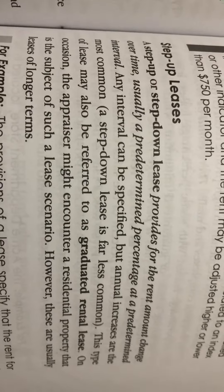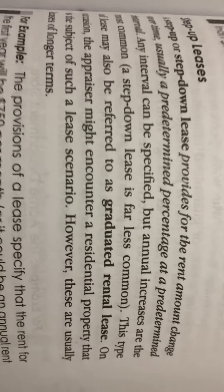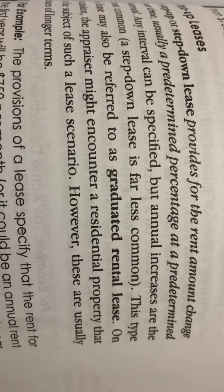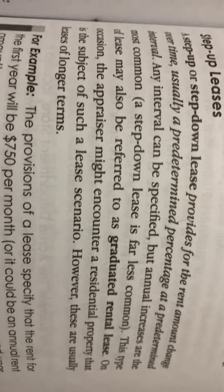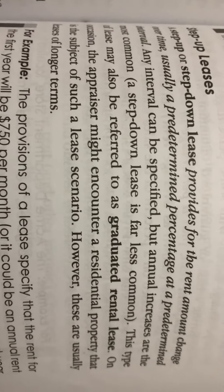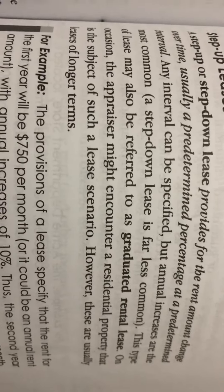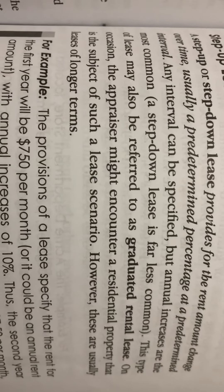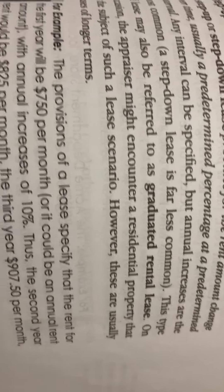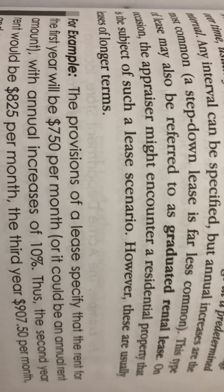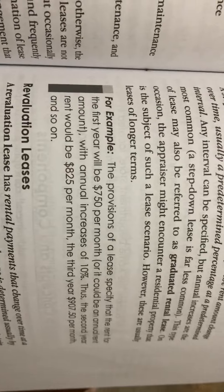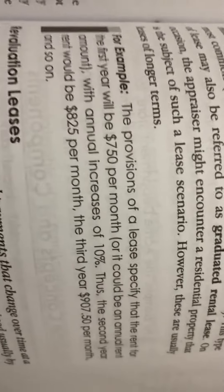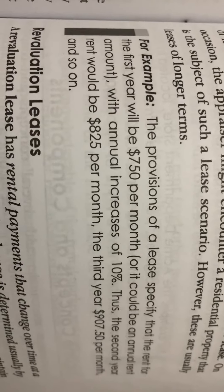Step-up leases. A step-up or step-down lease provides for the rent amount to change over time, usually a predetermined percentage at a predetermined interval. An interval can be specified, but annual increases are the most common. A step-down lease is far less common. This type of lease may also be referred to as a graduated rental lease. On occasion, the appraiser might encounter a residential property subject to such a lease scenario; however, these are usually leases of longer terms.